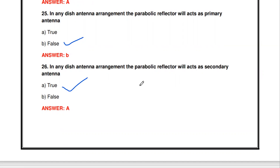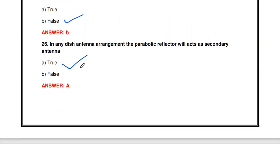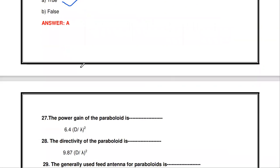In any dish arrangement, the parabolic reflector acts as a secondary antenna - that is true. In a dish arrangement, the parabolic reflector is the secondary antenna, and the dish is the primary antenna. The horn is the primary antenna.